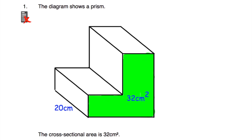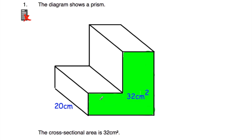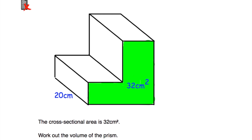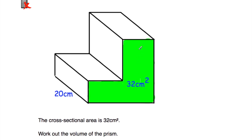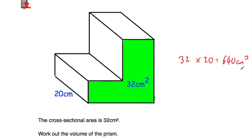Question number one. Here we've got a diagram of an L-shaped prism. We're told the cross-sectional area — the shaded area in green — is 32 centimetres squared, and we want to find the volume of the prism. To find the volume of a prism, we take the area of the cross-section, 32 centimetres squared, and multiply by how long the prism is. So we do 32 multiplied by 20, which gives us 640 centimetres cubed.